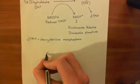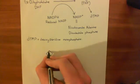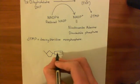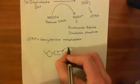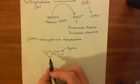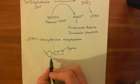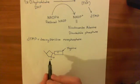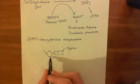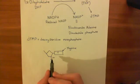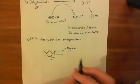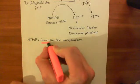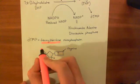Let me draw the basic structure. If this is the deoxyribose pentagon ring with the fifth carbon, the thymine organic base is bound to the deoxyribose. Deoxyribose is the same as ribose except a hydroxyl group is removed from the second carbon, so the second carbon has two hydrogens coming off it. That's the key difference: deoxyribose has two hydrogens at the second carbon, whereas ribose has a hydroxyl group and one hydrogen there. This deoxyribose bonded with thymine is deoxythymidine.